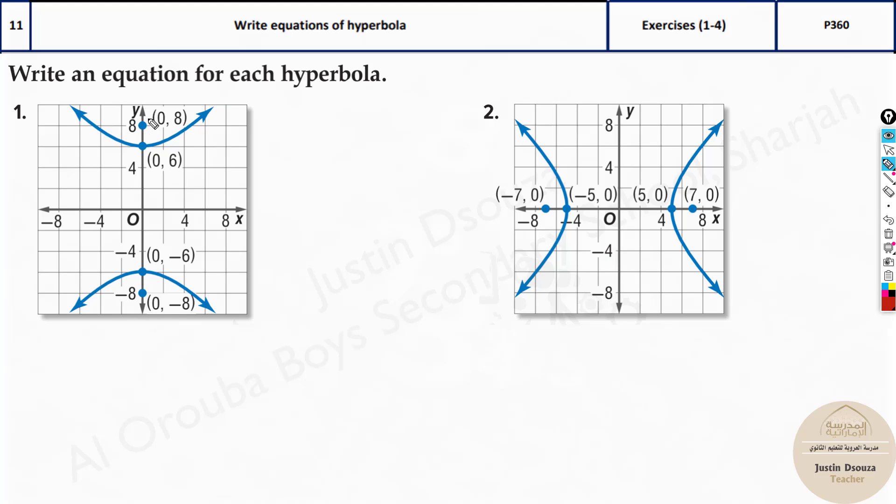So first you need to understand how it's oriented. This is about y axis so it will be y squared first by a squared. a squared is a length from its vertices minus x squared by b squared. So this is the minor part, the x squared one equals one.